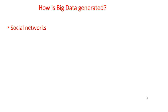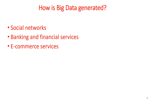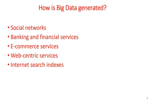So how is Big Data generated? Through our social networks like LinkedIn, Facebook, banking and financial services through stock markets, the streaming codes, e-commerce services — your Amazon generates those — web-centric services, anything which is online and creates a transaction, internet search indexes like whatever you type in Google.